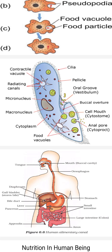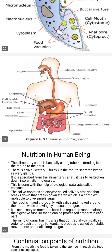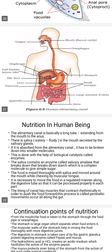In paramecium we also see the macronucleus, cytoplasm, food vacuoles, oral groove which is the vestibulum, buccal overture, cell mouth that is the cytostome, and the anal pore that is the cytopyge.